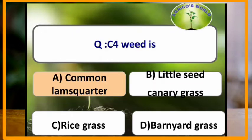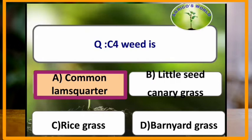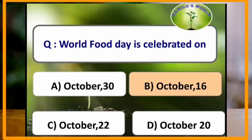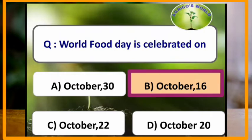Common lambsquatter is a C4 weed. World Food Day is celebrated on October 16th.